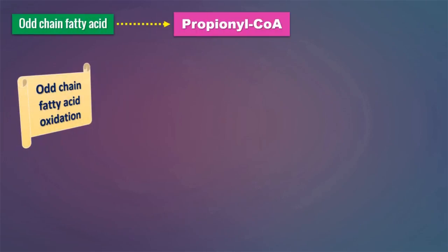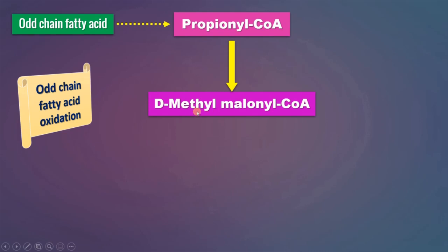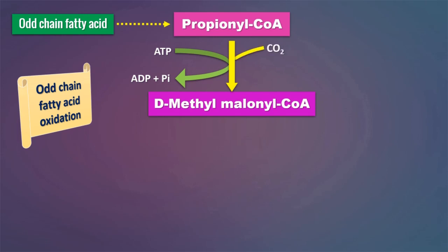This propionyl-CoA, which is generated as a result of beta oxidation of odd chain fatty acids, is converted to the D-stereoisomer of methylmalonyl-CoA. This reaction requires energy in the form of hydrolysis of ATP to ADP and inorganic phosphate, and it also requires carbon dioxide or bicarbonate. The name of the enzyme is propionyl-CoA carboxylase, which is similar to pyruvate carboxylase in carbohydrate metabolism. Since this is a carboxylase enzyme-catalyzed reaction, we require biotin as a cofactor.